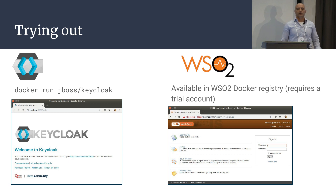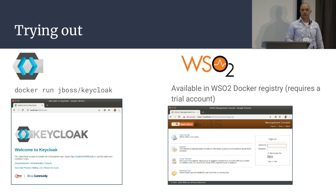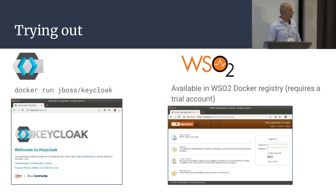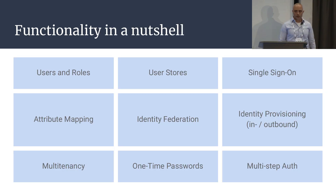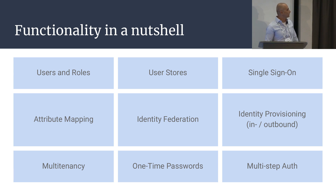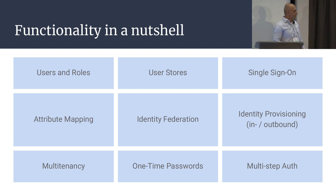If you're interested in trying these out, it's extremely easy. For KeyCloak, you just need a single Docker command, which is on the screen. For WSO2, unfortunately, you won't find public Docker registries, but you can download a binary package and install it, which is not that difficult either. The rest of this presentation will compare functionality one by one, starting with users and roles.